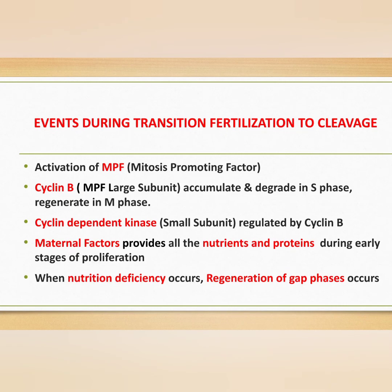Now let us discuss the events occurring during the transition from fertilization to cleavage. The main process is the activation of MPF — Mitosis Promoting Factor. MPF has two subunits: a large subunit called Cyclin B and a small subunit called Cyclin-Dependent Kinase. The blastomere cell cycle is regulated by the synthesis and degradation of Cyclin B. Cyclin B synthesis promotes the formation of MPF, which in turn promotes mitosis.